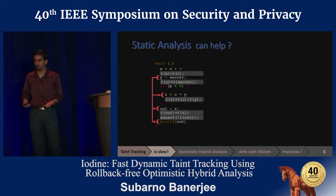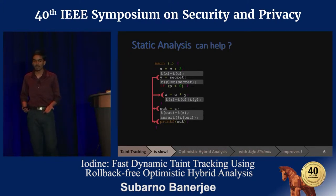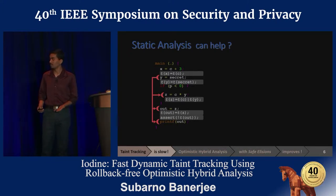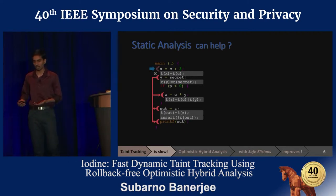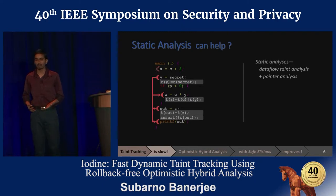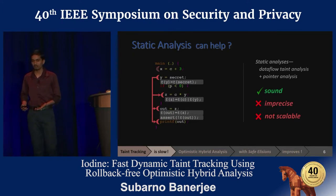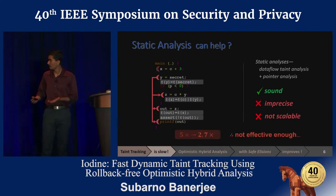Now, most programs are mostly correct, and a majority of instructions would not propagate taints in their correct dynamic executions. So many of these taint monitors are actually unnecessary, and a static analysis can elide some of the unnecessary monitors. For example, it can reason that the first instruction would never propagate taint, because both its operand c and the constant value are never going to be tainted. If static analysis can prove that an instruction never propagates taints using data flow analysis, we can elide tracking taints for such operations. However, this static analysis is sound but imprecise, unscalable, and ineffective in reducing the overall dynamic overheads.